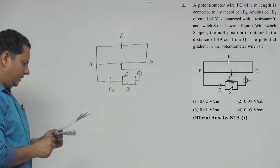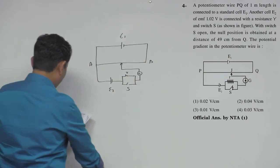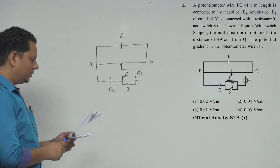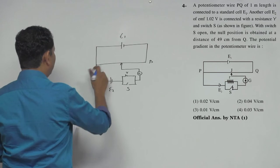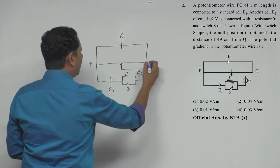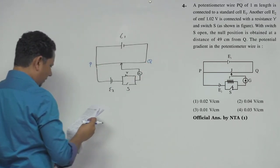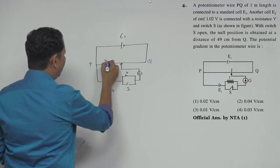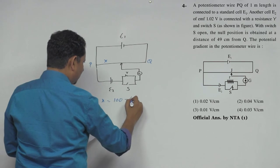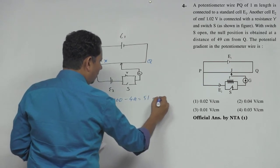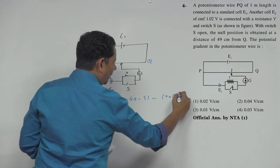Now in this case, what is given is the switch is open, so the null position is at 49 centimeter from Q. This is PQ - this is P and this side is Q. If we talk about length x, your total wire is one meter, so 100 minus 49, that is 51 centimeter. Your null point is at 51 centimeter from P.